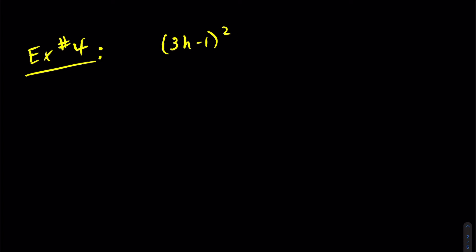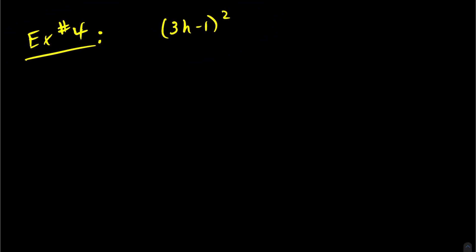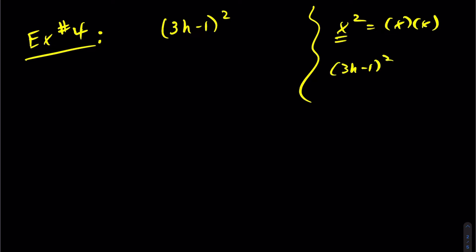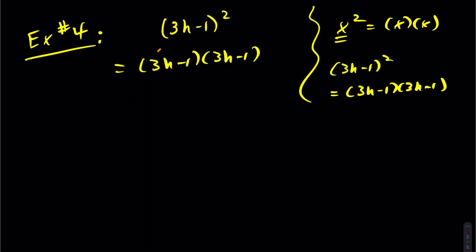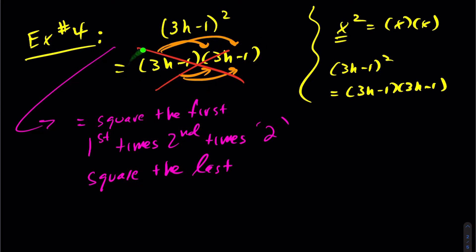Let's look at example 4. This is short-form notation — if you remember from your exponent rules, x squared means x times x. So (3h minus 1) squared means 3h minus 1 times 3h minus 1. You can expand this the long way using FOIL, but instead there's a shortcut: anytime you have a binomial to the power of 2, you square the first term, then do first times second times 2, and square the last.